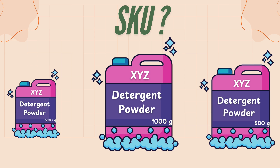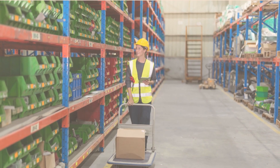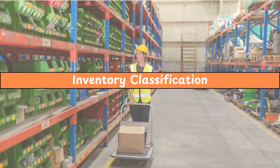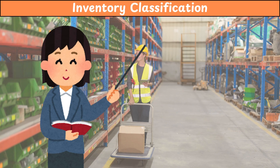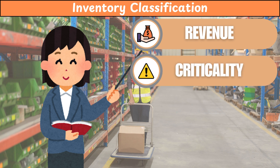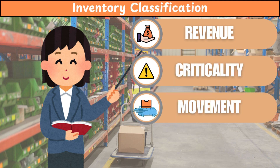Similarly, for a business, one SKU can be different from another in terms of its function, size, style, color, and often the location of either production or sales. Now that we have a good understanding of SKUs, let us look at some common classification methods. SKUs are classified based on revenue generated, criticality of the SKU, movement of the SKU, and demand variability of the SKU.